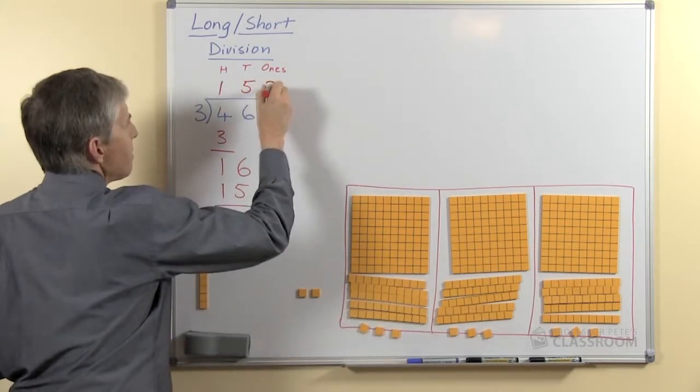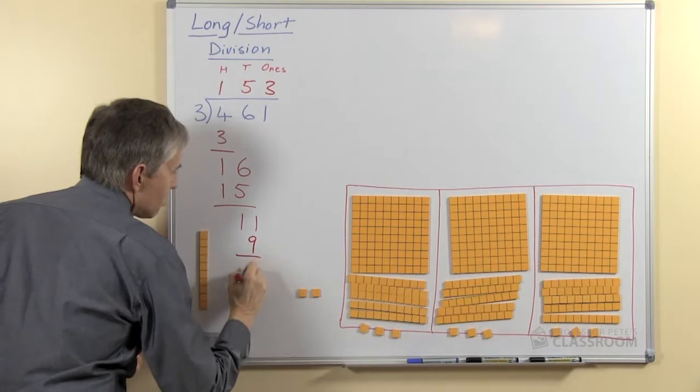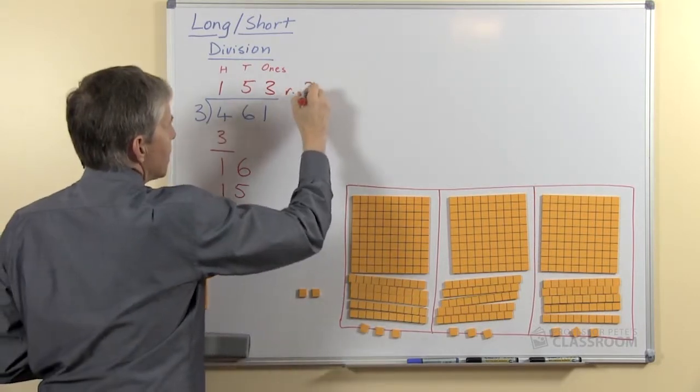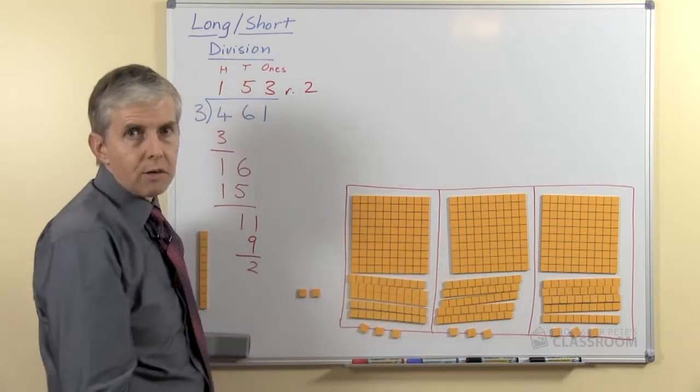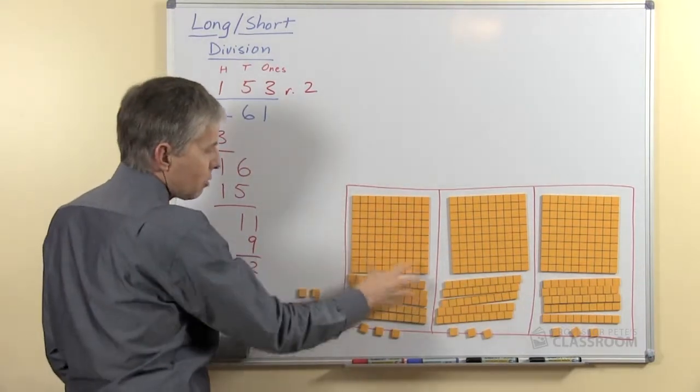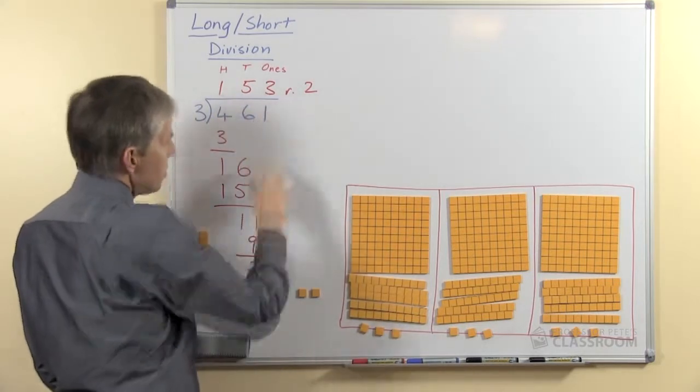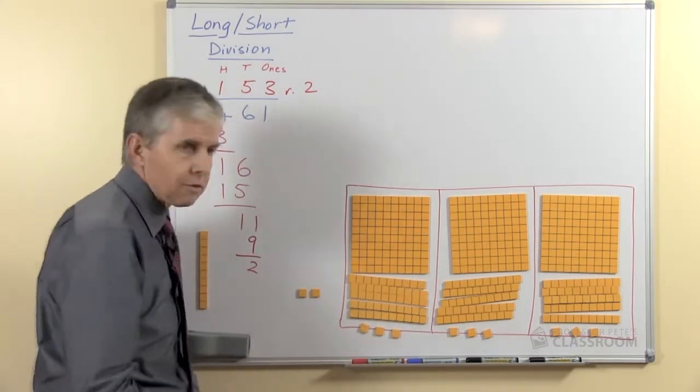Well the answer must be 3 because 3 threes are 9 and that will leave us with 2 left. So everybody gets 3, 3 threes are 9 and we have 2 left over and that's what we call the remainder. So the blocks show us clearly, everybody has 100, 5 tens and 3 ones are 153 and here are 2 left over.